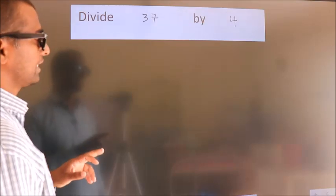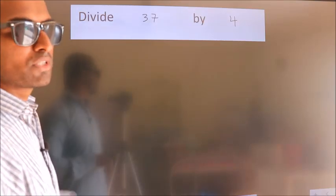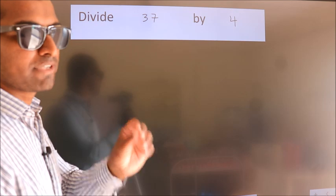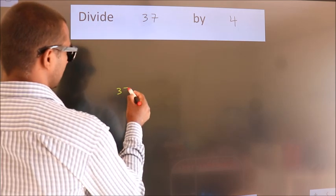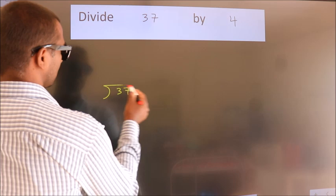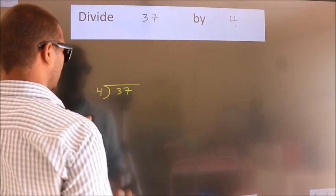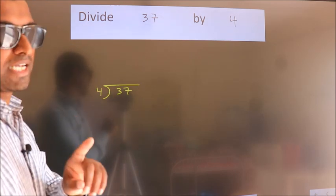Divide 37 by 4. To do this division, we should frame it in this way. 37 here, 4 here. This is your step 1.